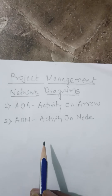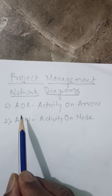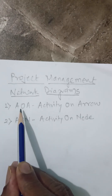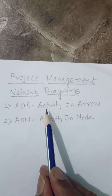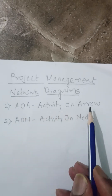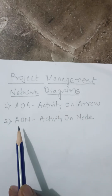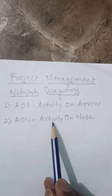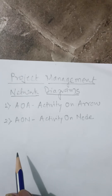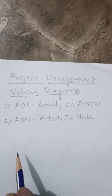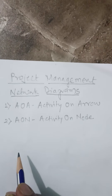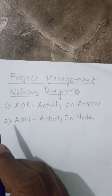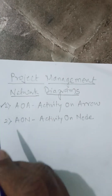We can draw these network diagrams in two different ways. The first one is AOA, that is Activity on Arrow. The second one is AON, that is Activity on Node. First, let us understand what an activity is, and we will be focusing more on the Activity on Arrow method in this video.